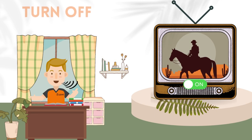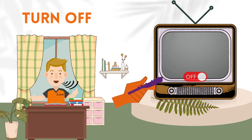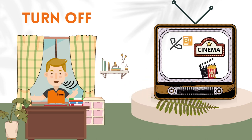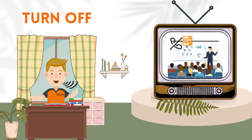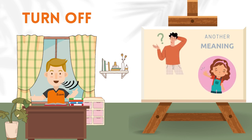Let's move on to the next phrasal verb: turn off. We also discussed the meaning of turn off — it means to deactivate something. You should turn off your phone while you're in a movie theater or while you're in a seminar. That is the first meaning of turn off.